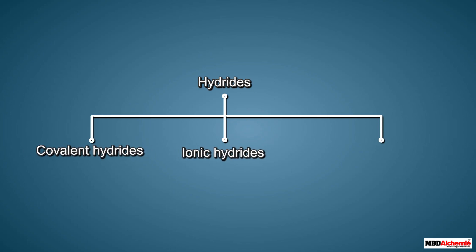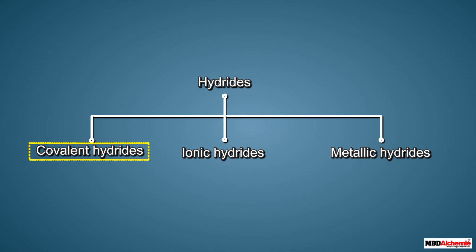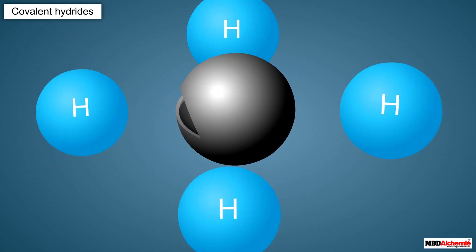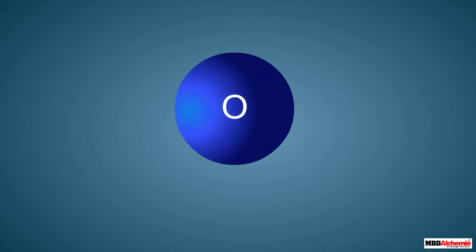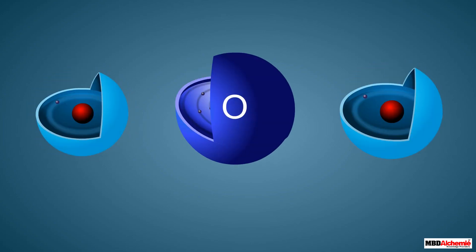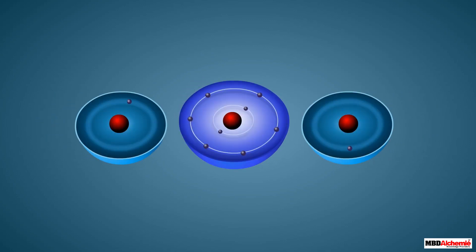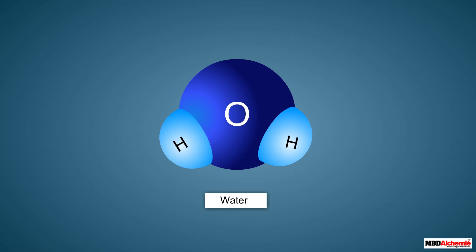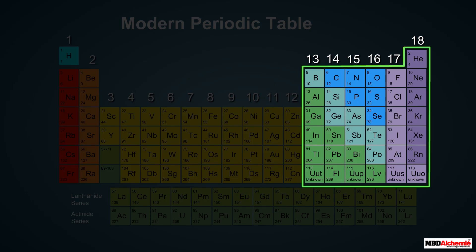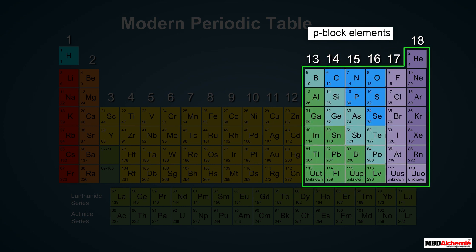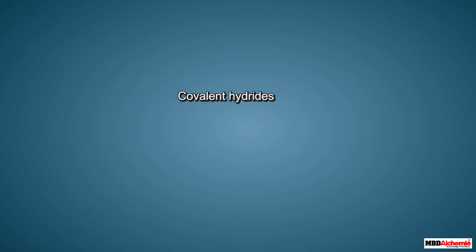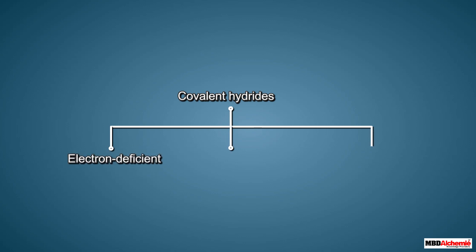Hydrides can be classified into three types: covalent hydrides, ionic hydrides, and metallic hydrides. Covalent hydrides, also called molecular hydrides, are formed by covalent bonding between hydrogen and an element. For example, two atoms of hydrogen combine covalently with one atom of oxygen to form water. Most p-block elements, that is group 13 to group 17 elements, form covalent hydrides.